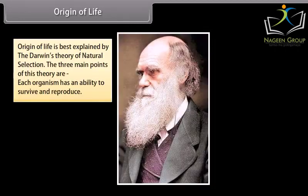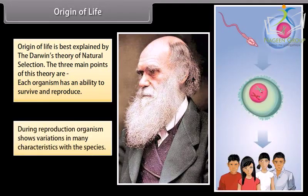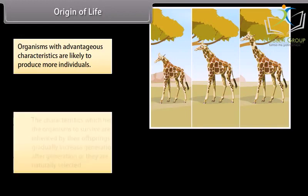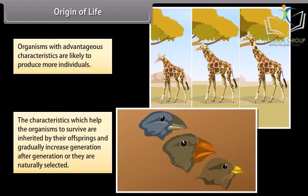The origin of life is best explained by Darwin's theory of natural selection. The three main points of this theory are: each organism has an ability to survive and reproduce; during reproduction, organisms show variations in many characteristics within their species; and organisms with advantageous characteristics are likely to produce more individuals. The characteristics which help organisms to survive are inherited by their offspring and gradually increase generation after generation — they are naturally selected.